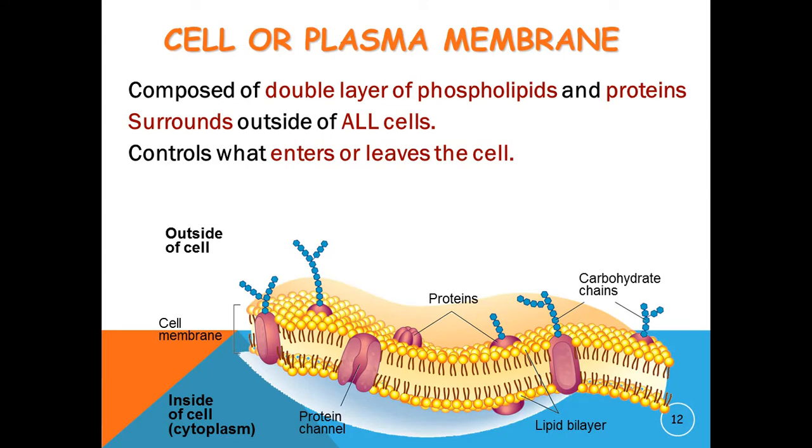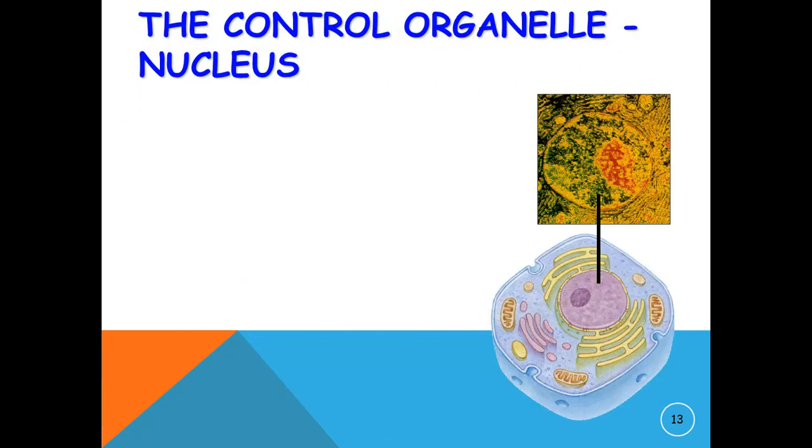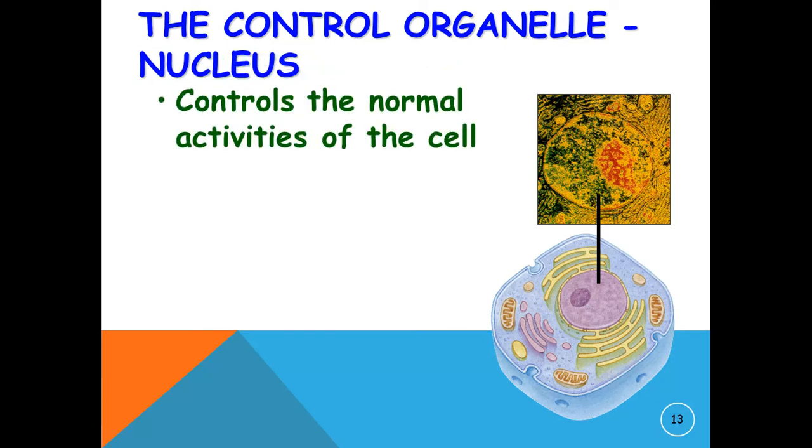In this diagram we can see the structure of a cell membrane. Here we can see the membrane bound proteins, carbohydrate chains on the outside, and protein channels and lipid bilayer of the cell membrane. The channels carry the molecules in and out of the cell membrane.